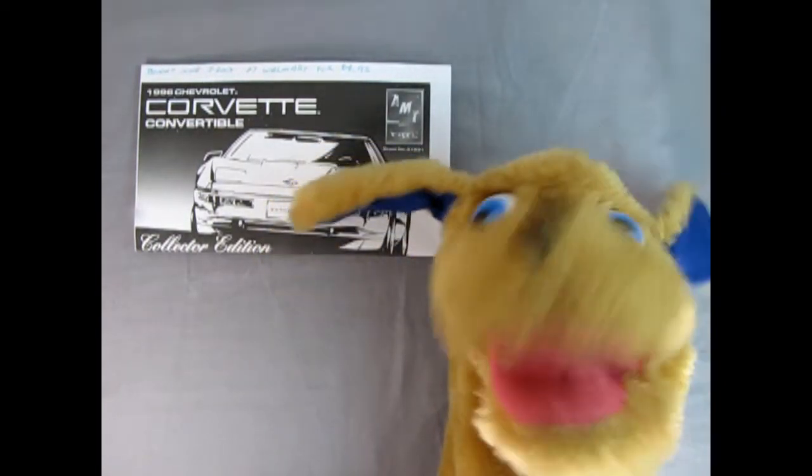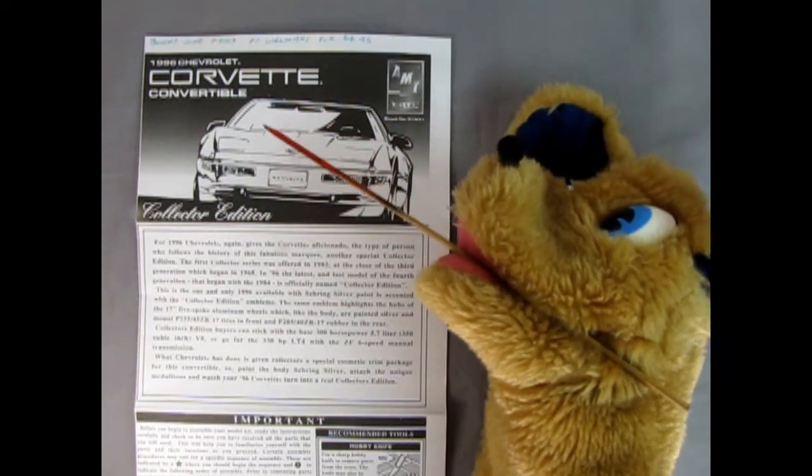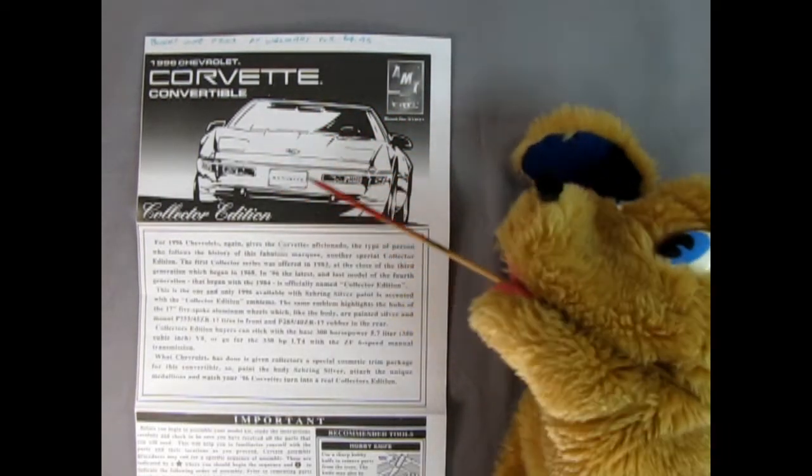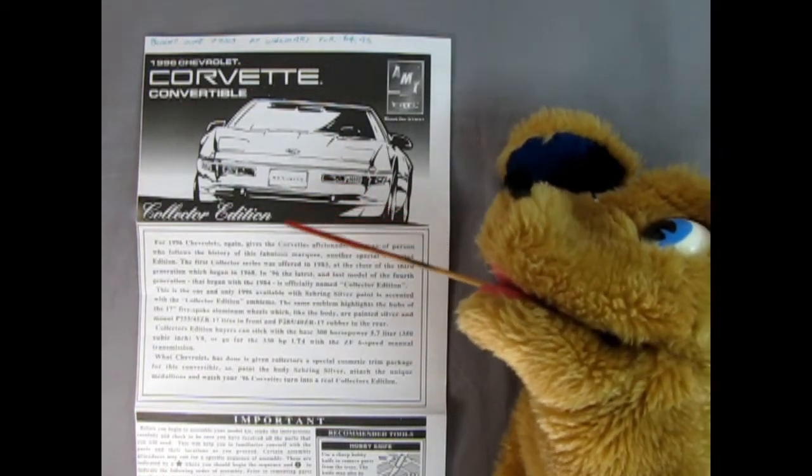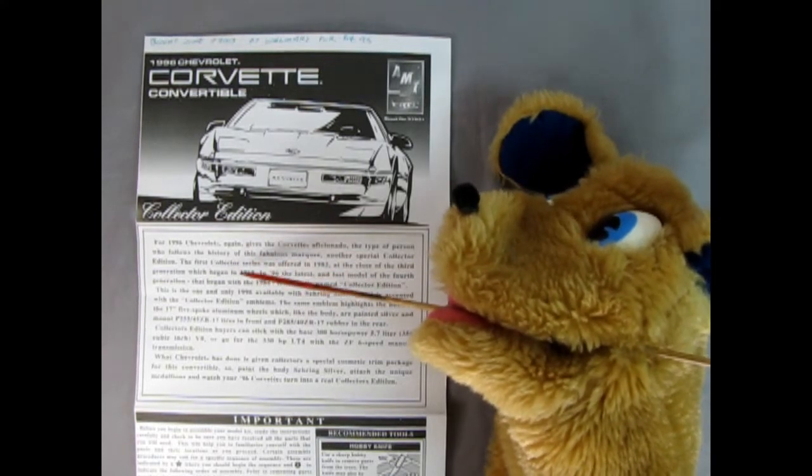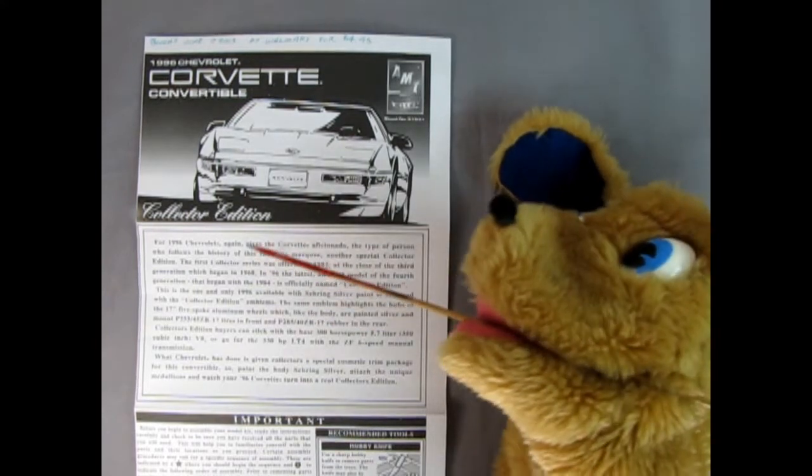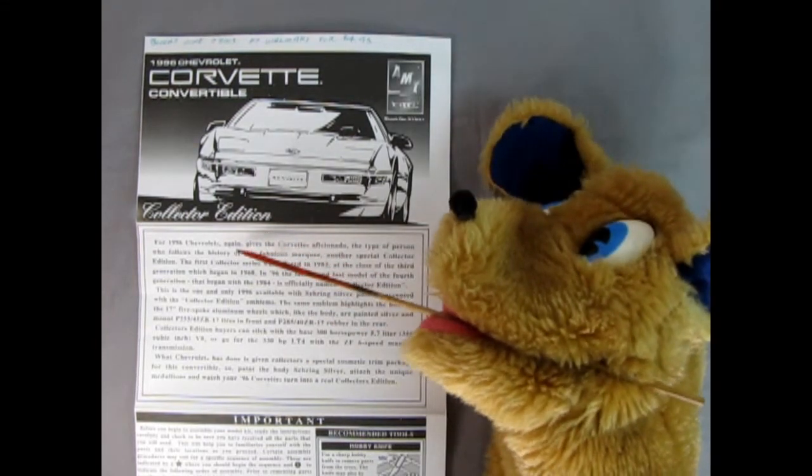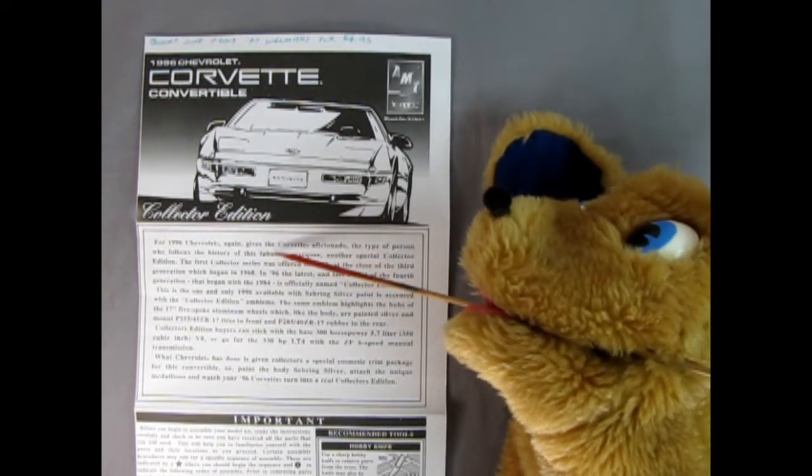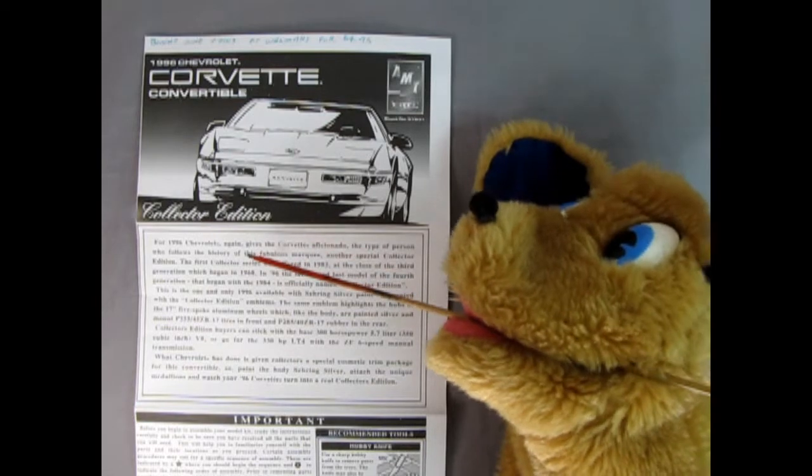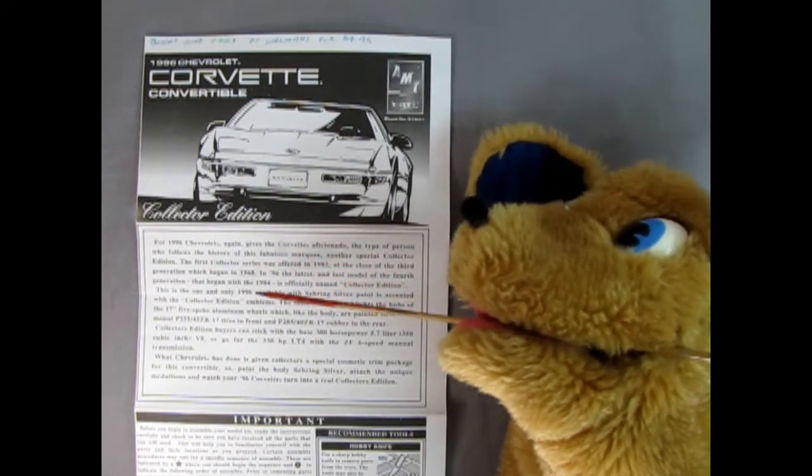Let's get into these Corvette instruction sheets. So here we have our Corvette instruction sheet for our '96 Corvette convertible. And you've seen this image on other AMT Corvette kits. Basically the same. Still looks good though. And now Trevor has some fingers on his hands so he's going to type this stuff into the description box in the video. But basically it says for 1996 Chevrolet again gives the Corvette aficionado, the type of person who follows the history of this fabulous marque, another special collector edition. So here it is. First collector series was offered in '82 and now we got another.